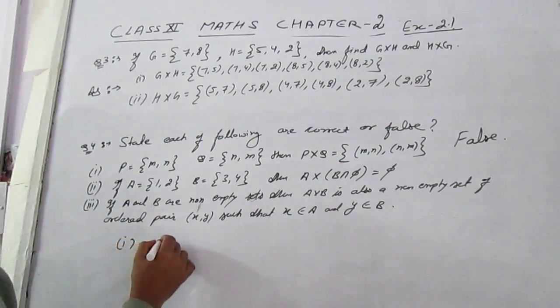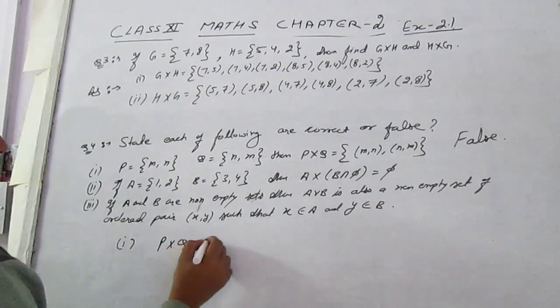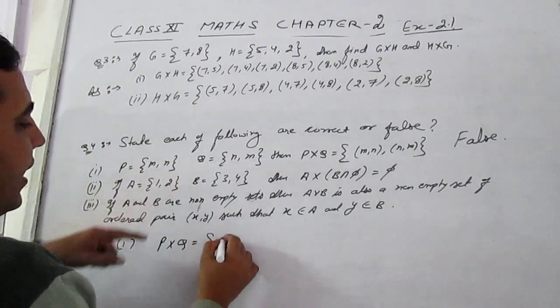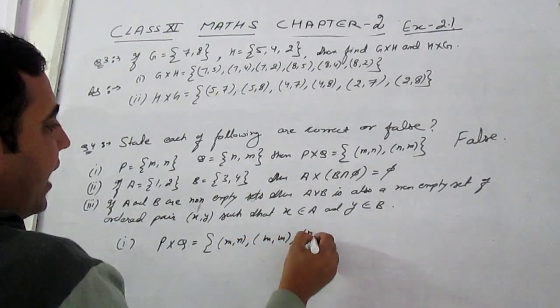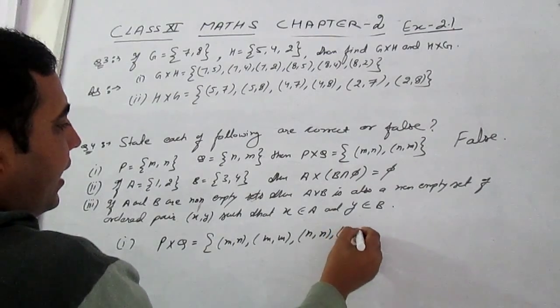And true is, P cross Q is equal to (m,n), (m,m), (n,n), (n,m).